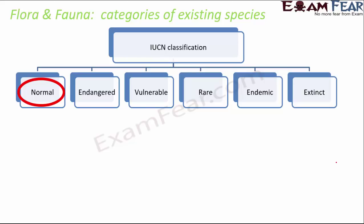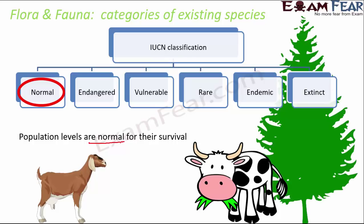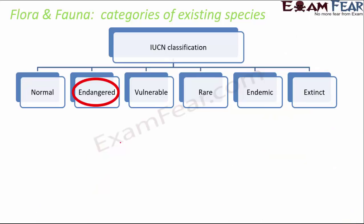The first category is normal species — those whose population levels are normal for their survival, with no abnormality seen in their population. Examples include cattle, cow, goat, pine trees, and roses. These all have a decent population and no significant decrease is seen, so they are categorized under normal species.